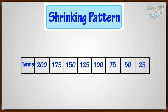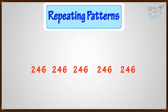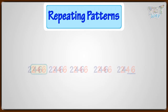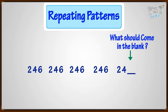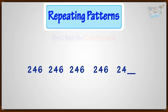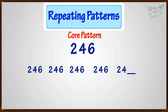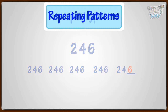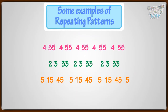Let's have a look at some other type of patterns — they are repeating patterns. Here, the numbers 2, 4, 6 are getting repeated, so it's a repeating pattern. What should come in the blank space here? In any repeating pattern, we first find the core pattern — that is the term that's getting repeated — and then we can repeat it any number of times to grow the pattern. Here the core pattern is 2, 4, 6. So according to the core pattern, 6 would come after 4. Now let's have a look at more repeating patterns. These are some examples of repeating patterns.